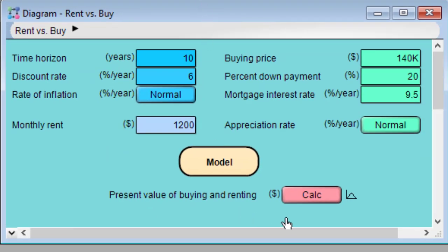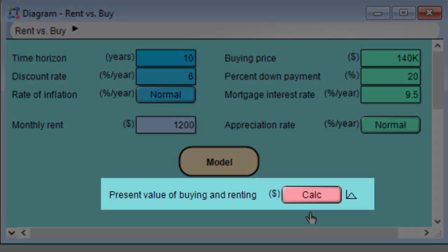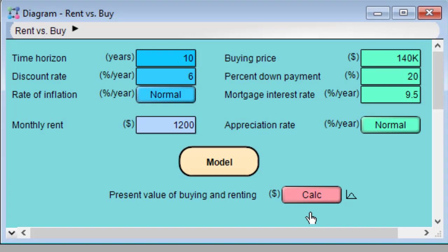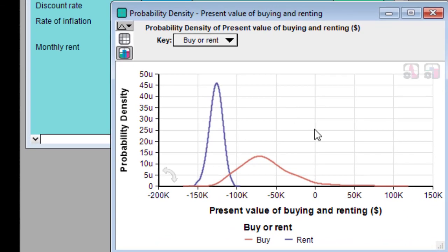In this diagram, the result of interest is at the bottom, present value of buying and renting. I'm going to leave all the inputs alone for the moment and click the calc button. This computes and displays the output value in a result window.